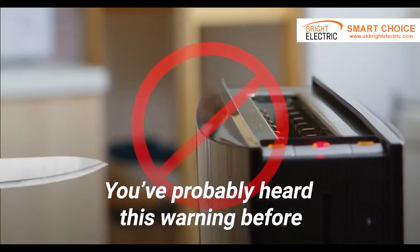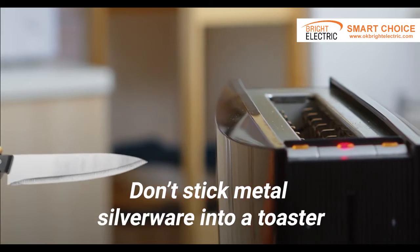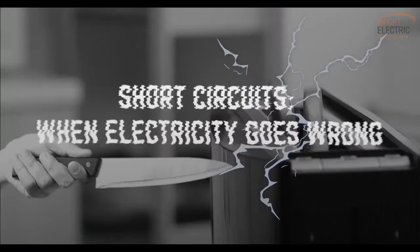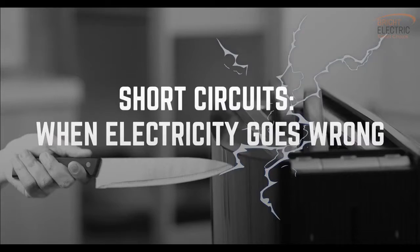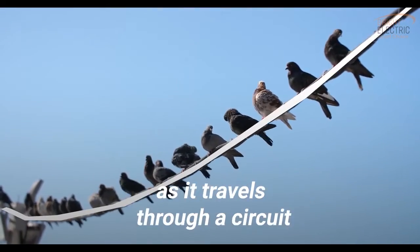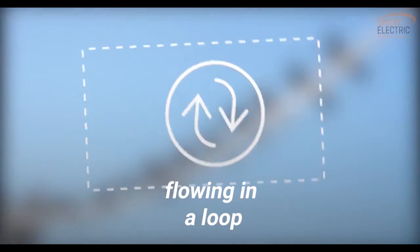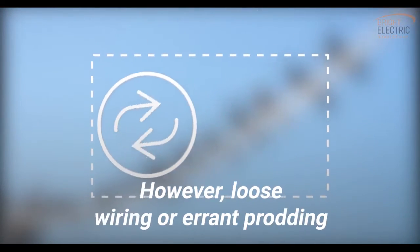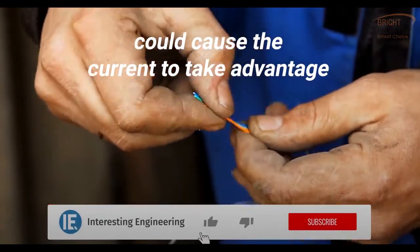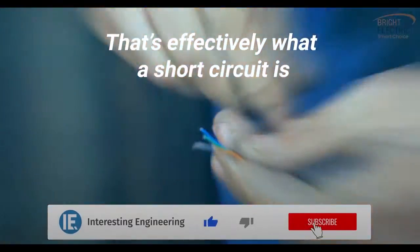You've probably heard this warning before: don't stick metal silverware into a toaster. Why? Because it could short circuit. Electricity follows a set path as it travels through a circuit, flowing in a loop. However, loose wiring or errant prodding could cause the current to take advantage of a shorter pathway.